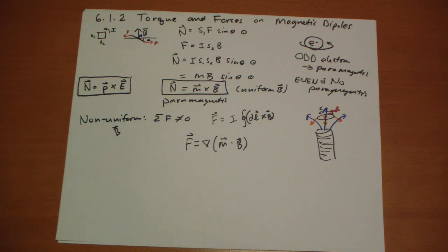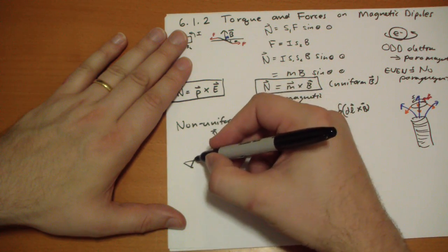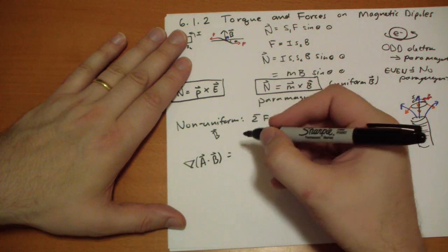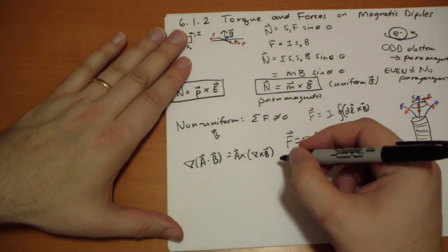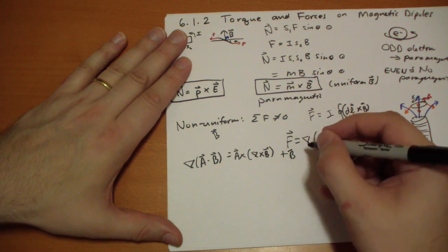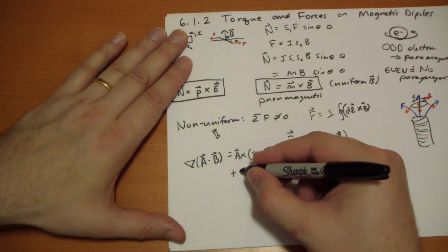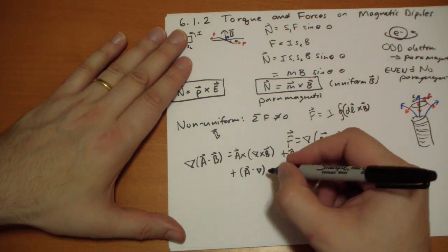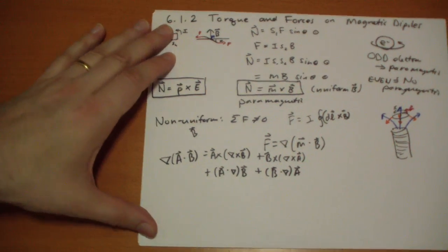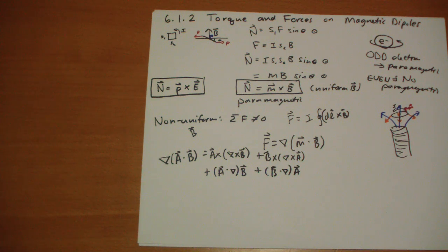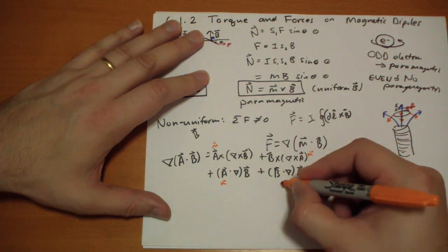We can apply product rule number four. It states that the gradient of two vectors dotted together equals the cross product of the first with the curl of the second, plus the cross product of the second with the curl of the first, plus A·∇B, plus B·∇A. In our case we are taking the gradient of the magnetic moment M dotted with the magnetic field B, so we substitute M and B into each position.